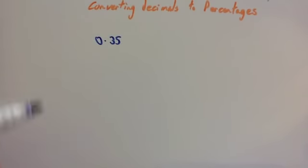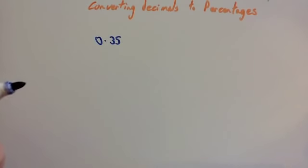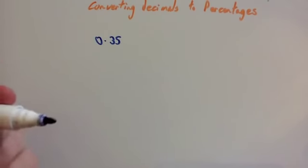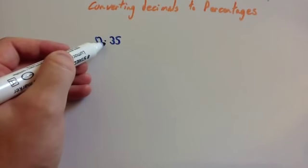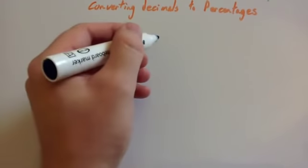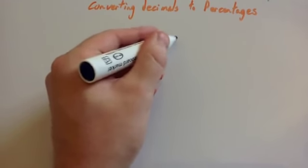So that's a decimal, 0.35, and then you multiply it by 100. Multiplying by 100 is the same as moving the decimal place two places to the right, or the numbers two places to the left. So if we move the decimal place two places to the right, it goes to 1, 2, so that would be 35%.